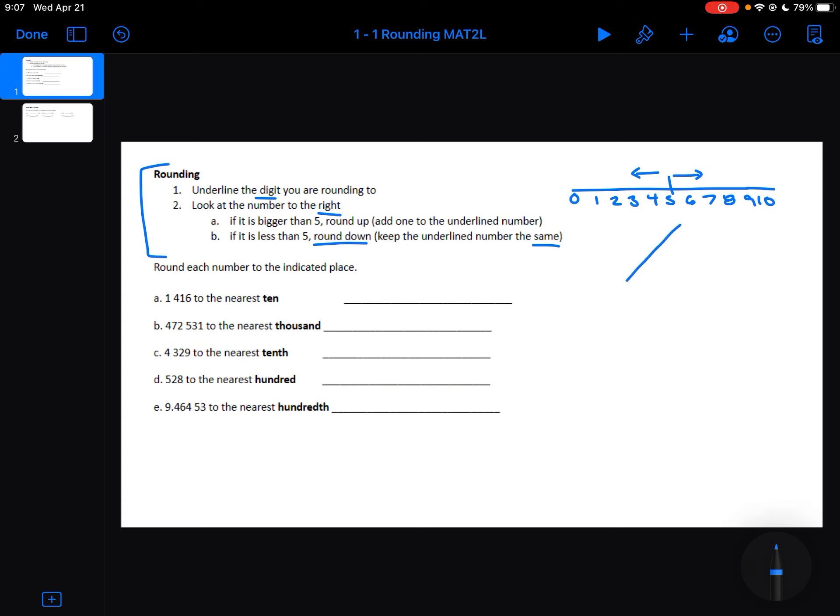If I bend my number line in the middle, so my 0 is at the bottom of the hill, and my 10, and then my 5 is in the middle.